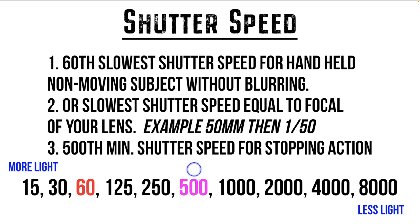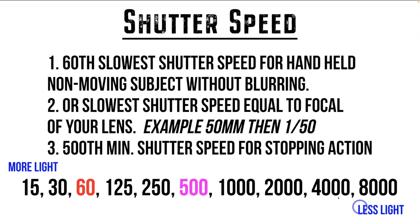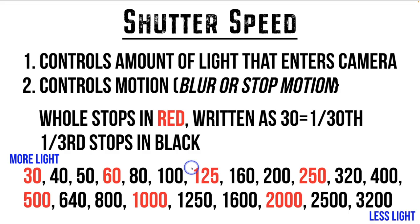Up here we've got 500. Like 60th, it's a minimum. If you are trying to stop action, the minimum shutter speed should be 1/500th of a second. However, this is really only good for slow or walking motion. If you really want to stop action, you need to jump up to 1/1000th of a second or faster, depending on the type of action you are trying to stop. Remember, every aspect of the camera does two things: one, it controls the amount of light — as we go slower we let more light in, and as we go faster we let less light in — and two, its secondary and more important aspect, it controls motion.